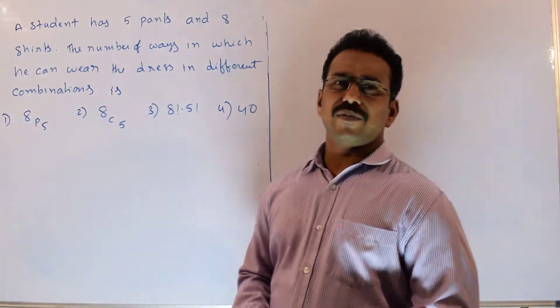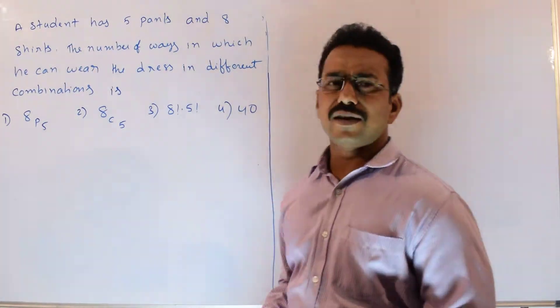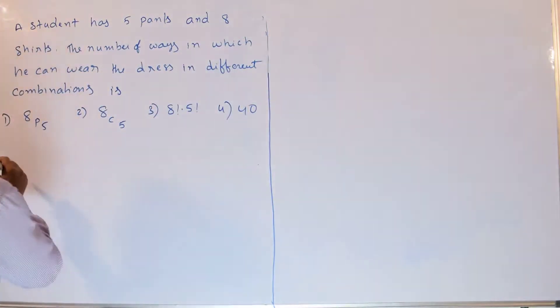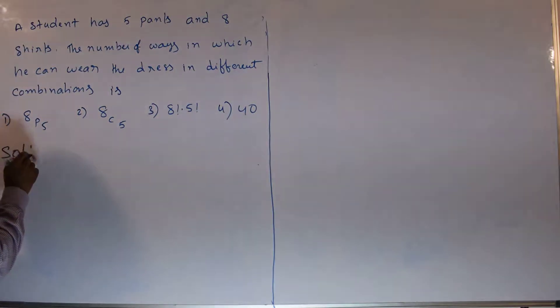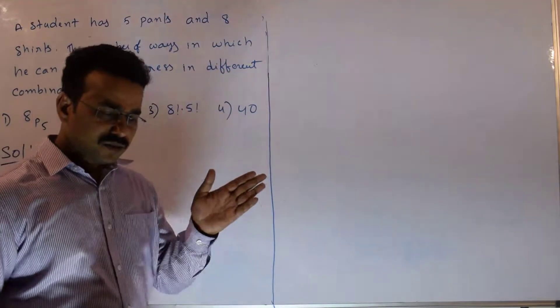Here our primary task is to find the total number of ways to choose a dress. Let's start the solution. What is our task? Our task is to choose a dress.